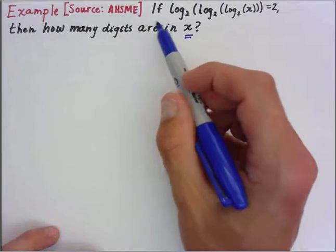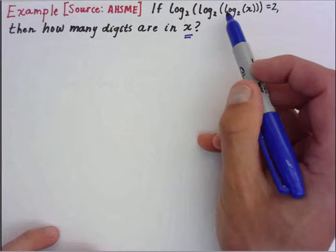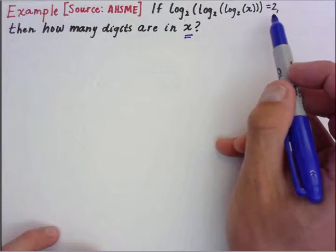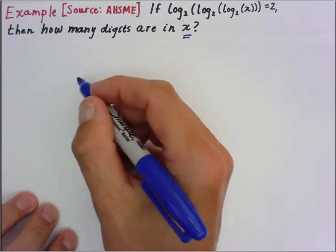I got this out of The Art of Problem Solving, so check it out. If log base 2 of log base 2 of log base 2 of x equals 2, how many digits are in x? This is a fun little problem, so let's check it out.